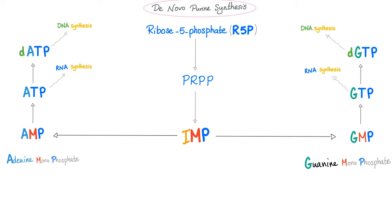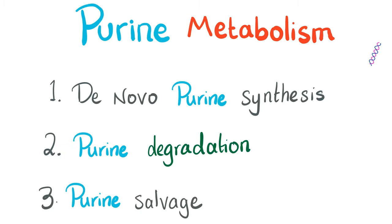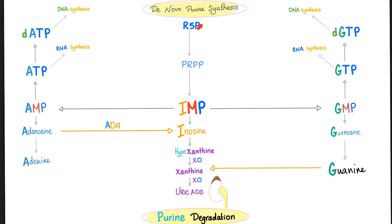That was the first step in purine metabolism — the de novo purine synthesis. We successfully built up purines. Now let's break them down — the degradation pathway. IMP degrades to inosine by removing the monophosphate. Then inosine becomes hypoxanthine. By an enzyme called xanthine oxidase it becomes xanthine, and then by the same xanthine oxidase it becomes uric acid.